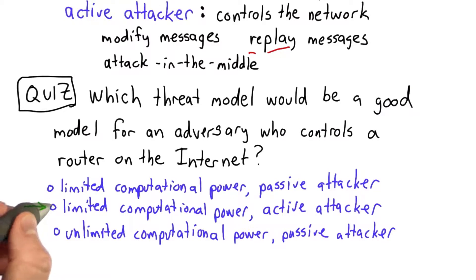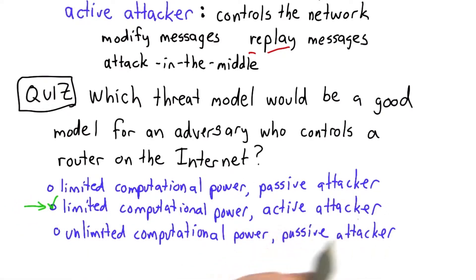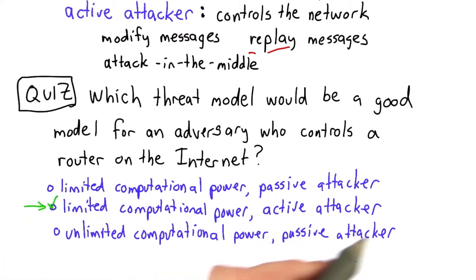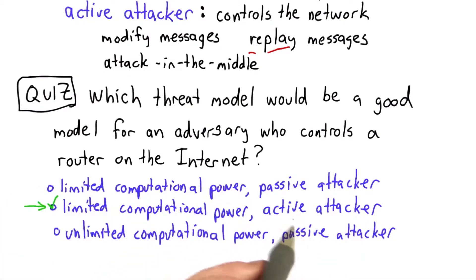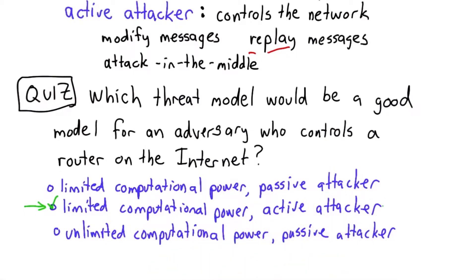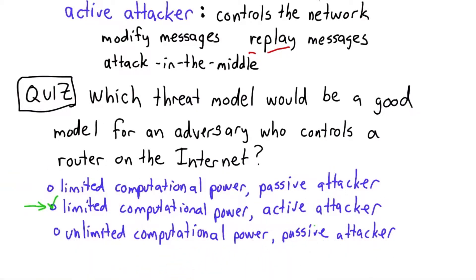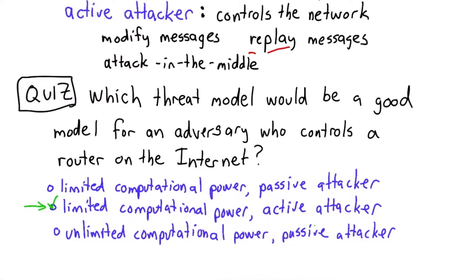This would be an attacker who has limited computational power but does have active capabilities. Since they control the network, they can modify messages going through that router. They could replay messages, they could act as a middle attacker. They have lots of things they can do other than just intercept and try to analyze intercepted messages.